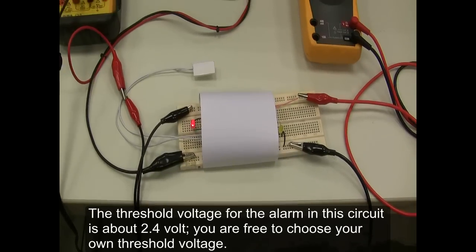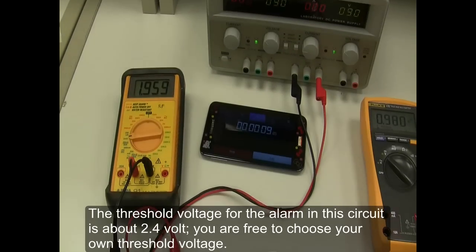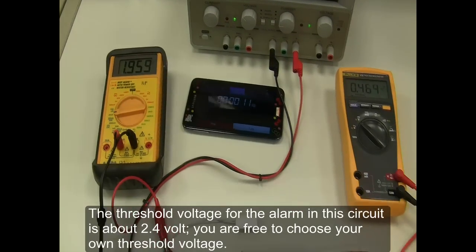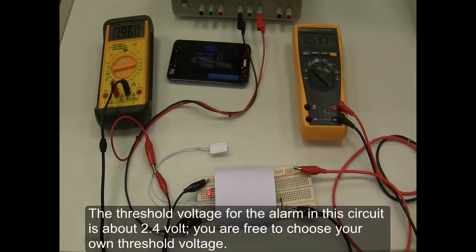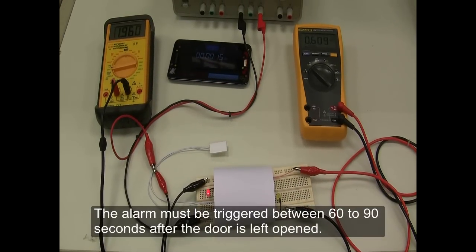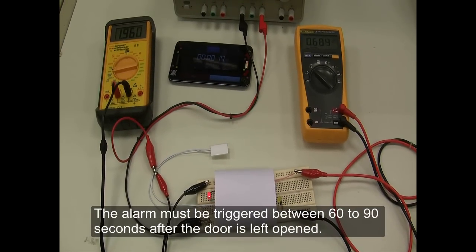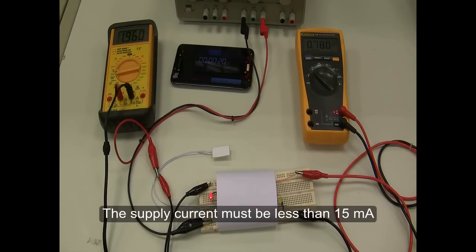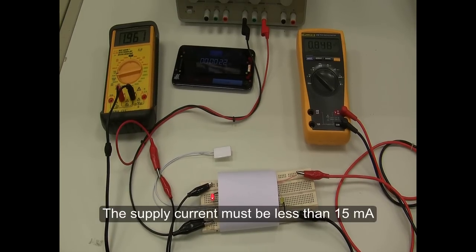The threshold voltage for the alarm in this circuit is about 2.4 volts. You are free to choose your own threshold voltage. The alarm must be triggered between 60 to 90 seconds after the door is left open. The supply current must be less than 15 milliamperes.